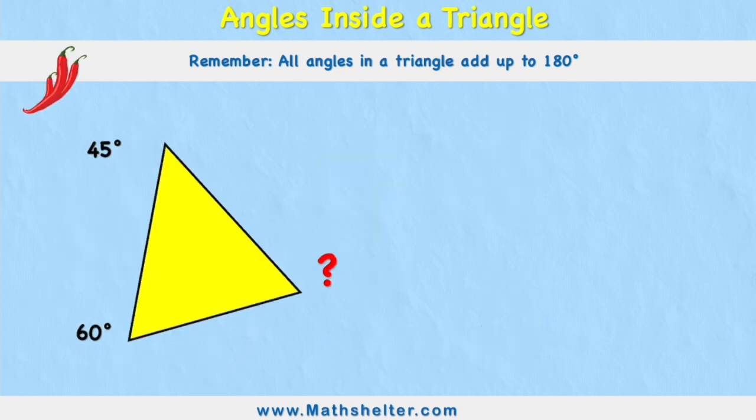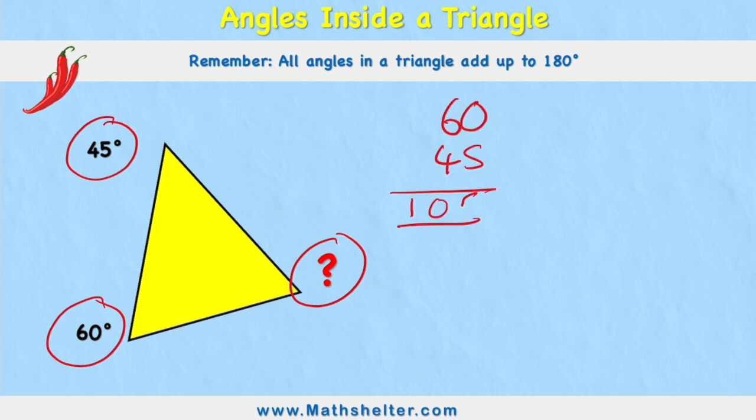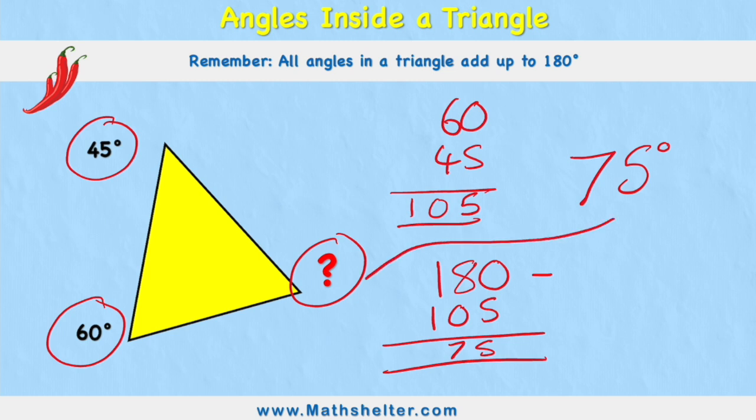Let's have a look at this red chili challenge. This time we have some more complicated numbers. I have 60 degrees, 45 degrees, and I'm missing degrees. Well, let's add our 60 to our 45 and I get 105. And we know that the total must be 180. So if I get my 180 and I subtract 105, I am left with 75 degrees. So I know that this missing angle must be 75 degrees. Simple.